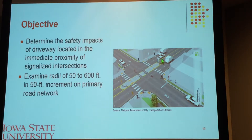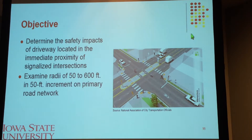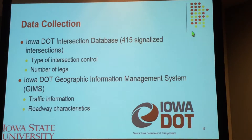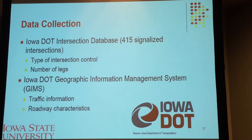That's why the objective of this study was to determine the safety impacts of driveways near signalized intersections. We used 12 different buffer distances from the center of the intersection, ranging between 50 to 300 feet with an increment of 50 feet, on the primary road network. To accomplish this study, several data sources were integrated. The first is the Iowa DOT intersection database, which we used to obtain our sample of 450 signalized intersections within urban areas in Iowa, including the type of intersection control and number of approaches.